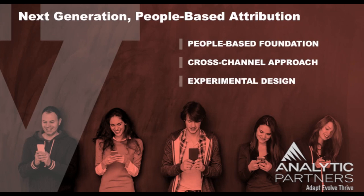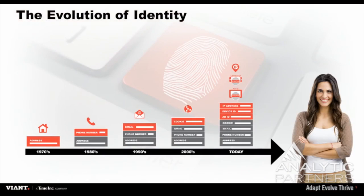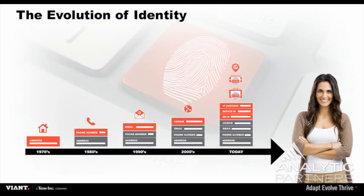If you look at identity and the evolution of identity, it's really interesting. Early days you had direct mail based on your home address and phone number, then email became prevalent, and then you had the rise of the internet. What happened then is we went from pretty exacting identifiers to something more fuzzy — a cookie attached to a device. Fast forward to today where we've got IP addresses, device IDs, and all these different identifiers that tie back to machines, households, or individuals.